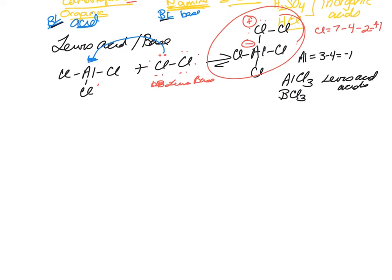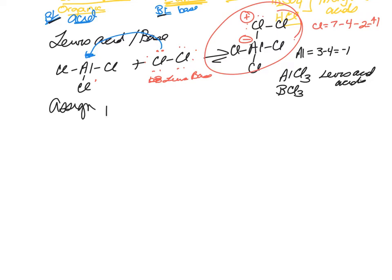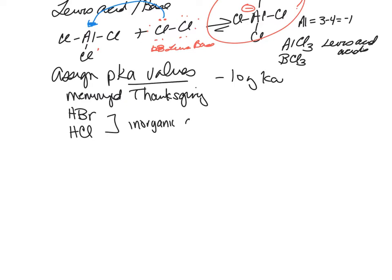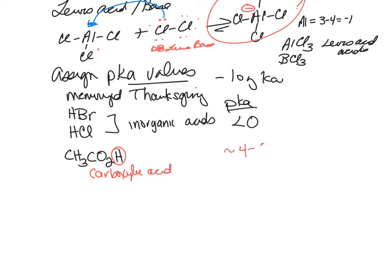Another learning objective is to assign pKa values. You can review that a pKa value is the negative log of the K value. You will need to have these pretty much memorized by Thanksgiving, but you'll get used to using them. Let's list a few: HBr, HCl — these are your inorganic acids. You just need to know that they have a pKa value of less than zero. For organic acids, acetic acid's acidic proton — this is a carboxylic acid functional group — has a pKa of between four and five.